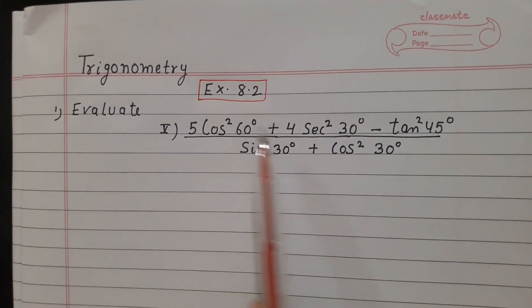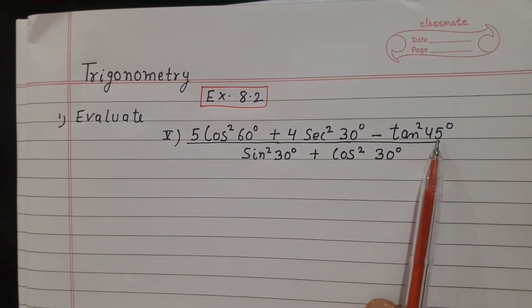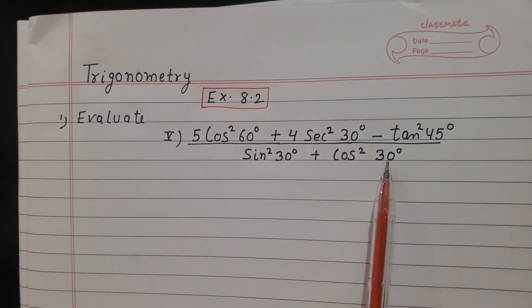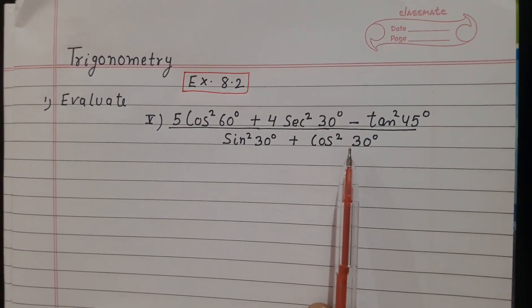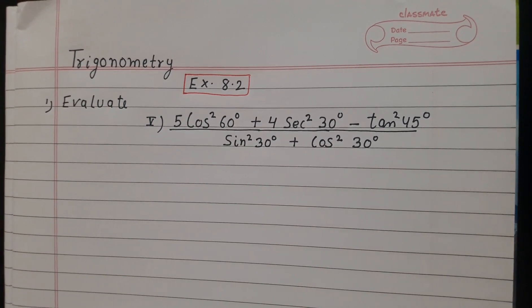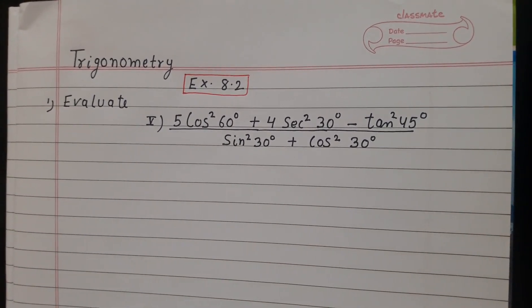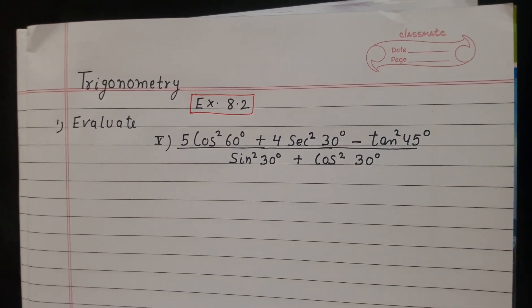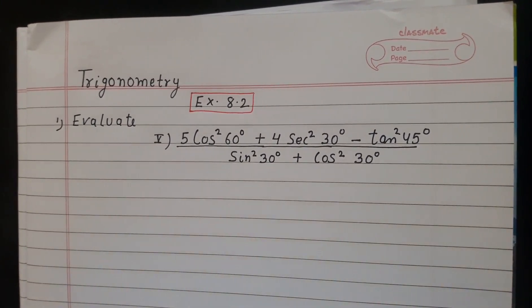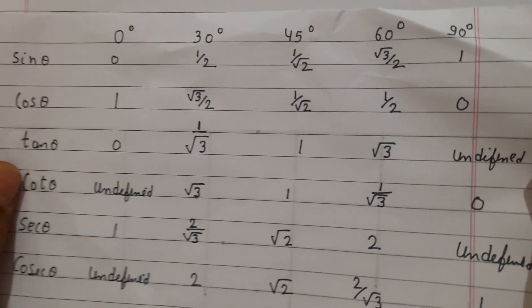We need cos 60, sec 30, tan 45, sin 30, and cos 30. All these values we have to look at in the trigonometric table. As I have told you in the previous video how you can make the table, you have to check these values from the table.